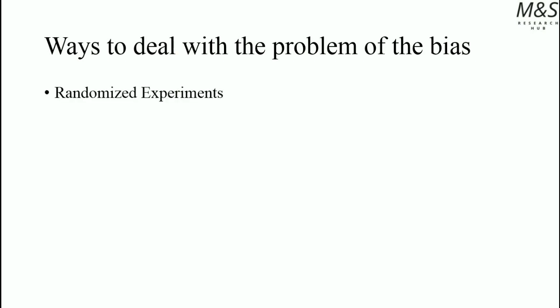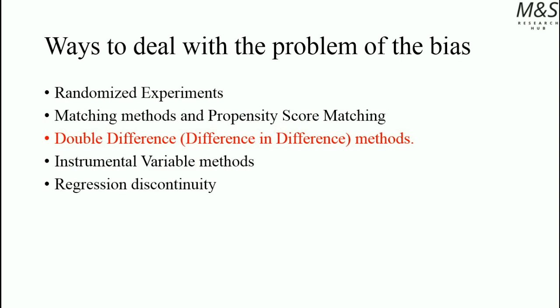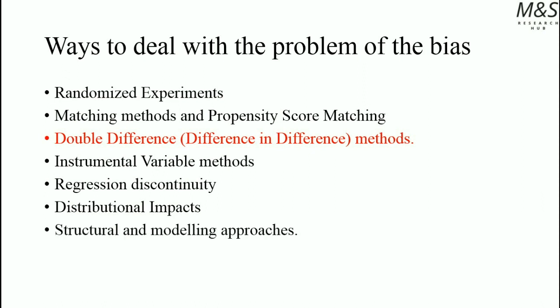Ways to deal with the problem of bias include: randomized experiments, matching methods and propensity score matching, double difference or difference-in-difference methods, instrumental variable methods and regressions, regression discontinuity and distributional impacts, and structural and modeling approaches. Regarding the last one, in public policy analysis, economic models are sometimes used to establish what the expected results of an implementation would be, or the behavior of individuals or economic agents, establishing the possible variables that intervene in a decision and the possible impact.